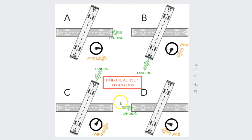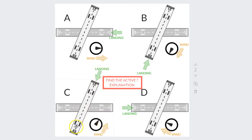If the wind is blowing that way, we need to select the most appropriate runway, which is this one here, and land in that direction — 0-9. Here, if the wind is blowing that way, we need to select the opposite direction, which is 2-1. So that's how to select your active runway.